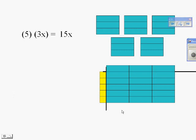We can talk about this in two different ways. You can see this as 5 groups of 3x — there's 3 in that group and you have 5. Or you can look at this as 3 groups of 5. Either way, you have 15 pieces making up that area. That is an example of how multiplication is commutative: 5 times 3 is 3 times 5.